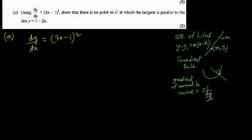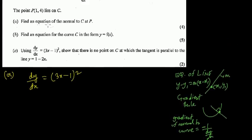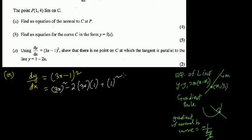To find the equation of the normal line, we first need the gradient. dy/dx is already given, so we don't have to differentiate the curve again — that is a common error. If you break (3x - 1)² down as (a - b)², it would be 9x² - 6x + 1, but this is already the gradient.